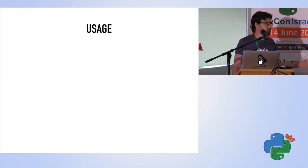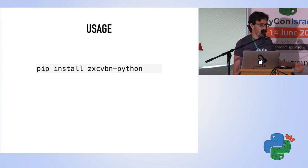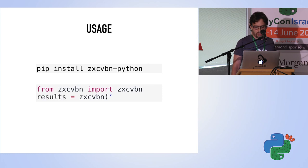What about the usage? Also super simple. Install it by pip install zxcvbn in Python, then import it and just call the function with the password, and you get a full detailed result.